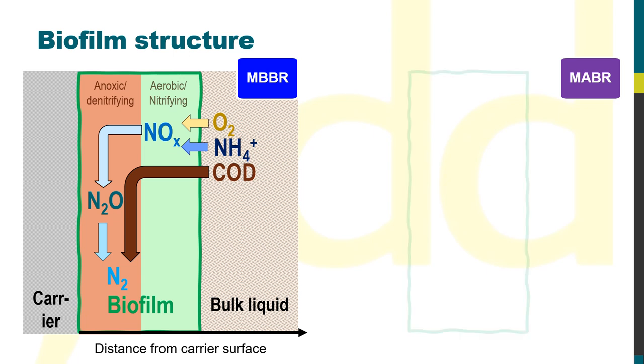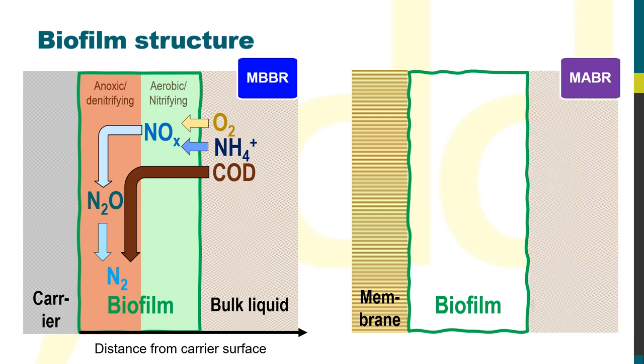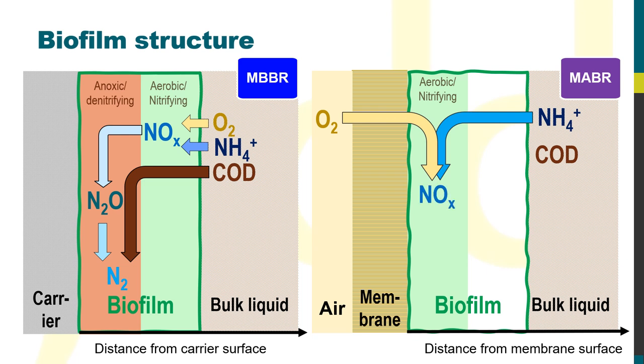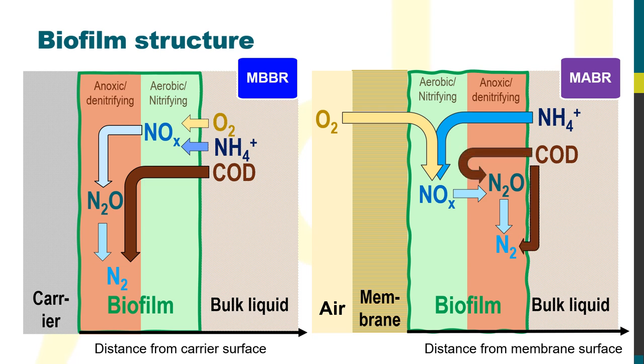For the MABR, the biofilm sits between the membrane, which is also the carrier, and the bulk liquid. The ammonia and COD enter the biofilm from the bulk liquid as with the MBBR, but the oxygen enters from the other side of the biofilm. This means that the aerobic region where nitrification takes place is next to the membrane. The anoxic region where denitrification occurs is next to the bulk liquid where the COD concentration is at its highest.